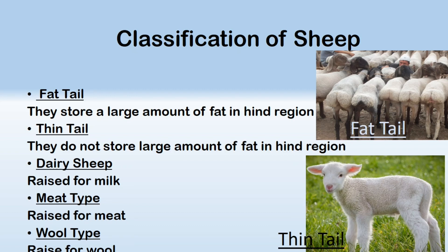Sheep can be classified into two groups on the basis of their phenotype: fat tail sheep and thin tail sheep. Fat tail sheep are called so because they store a large amount of fat in their tail or hind region, while thin tail sheep do not. Sheep can also be classified according to what they produce: dairy sheep, meat type, and wool type.